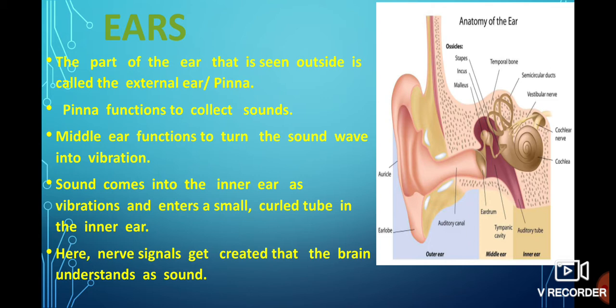Middle ear also functions to turn the sound wave into vibration. When we are getting the sound, it comes in the form of a wave and then it gets converted into vibration form. Sound comes into the inner ear as vibration and enters a small curled tube in the inner ear. Your nerve signals get created, then the brain understands as sound.